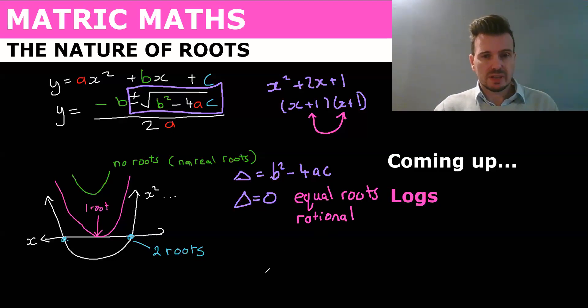The other way you could get rational roots is if this b squared minus 4ac was a perfect square. So let's look at if delta is greater than zero.